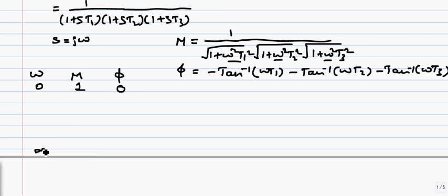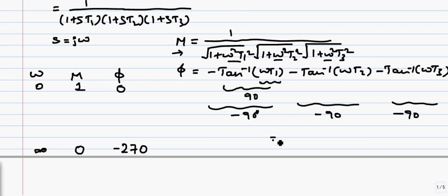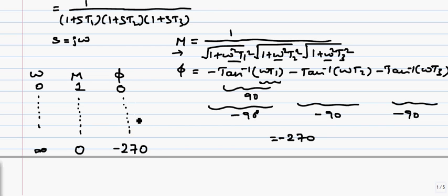When ω tends to infinity, the magnitude M tends to 0. The phase angle φ tends to −270°, because tan⁻¹(∞) = 90°, and including the minus sign each term contributes −90°. With three terms, the sum is −3 × 90° = −270°. So as ω goes from 0 to infinity, magnitude reduces from 1 to 0, and phase angle changes from 0 to −270°.